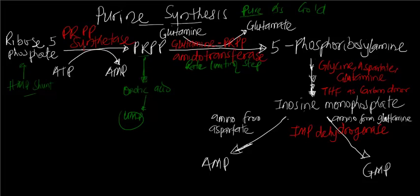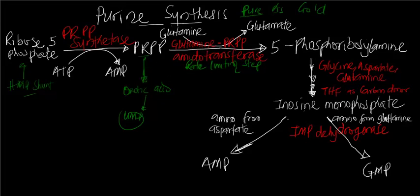Let's go through the pathway again and note where drugs can inhibit it. Looking at the first conversion: ribose 5-phosphate to PRPP by PRPP synthetase, and PRPP is converted to 5-phosphoribosylamine by glutamine PRPP amidotransferase. This is the rate-limiting step, and we have things that can actually inhibit this pathway.